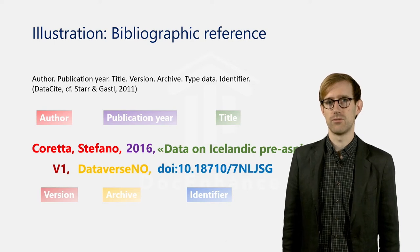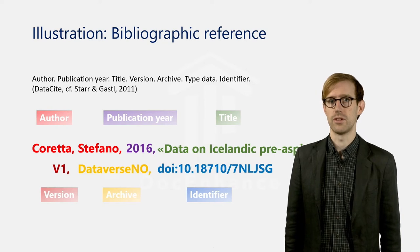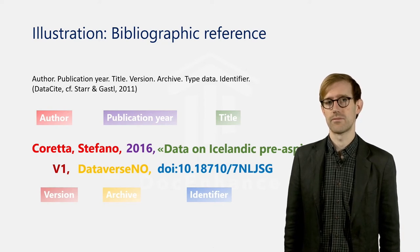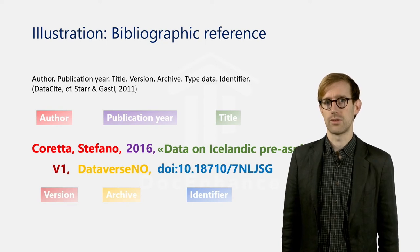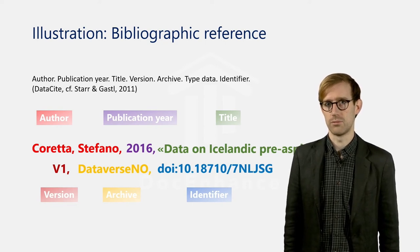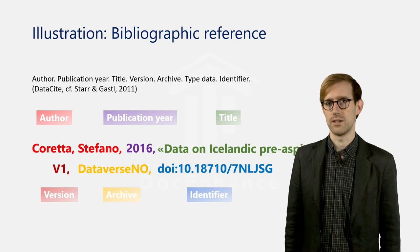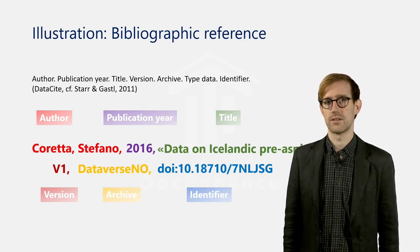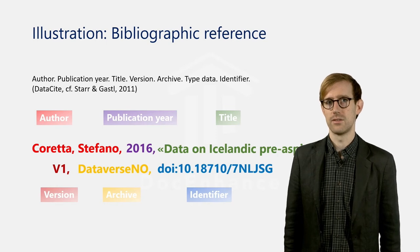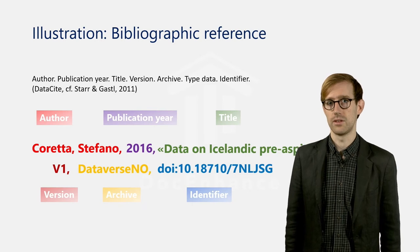The version is a particularly important piece of information if the data set has undergone change or revision since it was first published. The type of data used is also important — for example, whether you have used the raw data or processed data. In some data archives, individual files within a data set will have their own unique identifiers, which is particularly useful if you want to cite specific files. In such cases, the related identifier that leads to the full data set can be relevant to include in the reference.